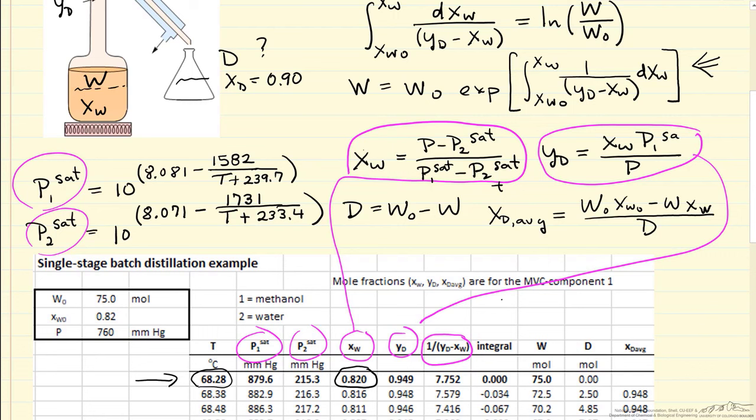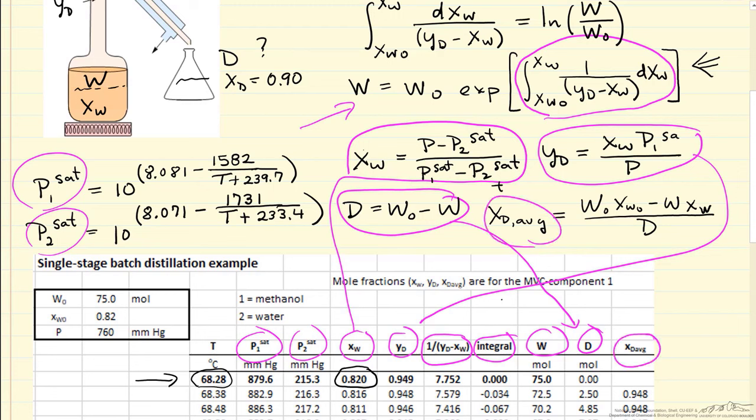The integral—we're going to use essentially Euler small steps to calculate the integral. The integral is this term here. Then W is this equation where we have the exponential times the starting value of W. D is just the mass balance. This equation gives us D, and then x_d average is here.